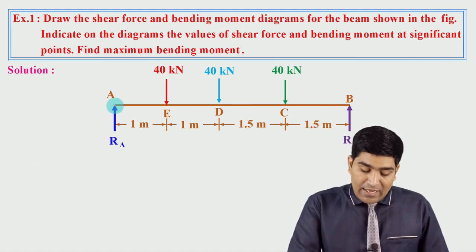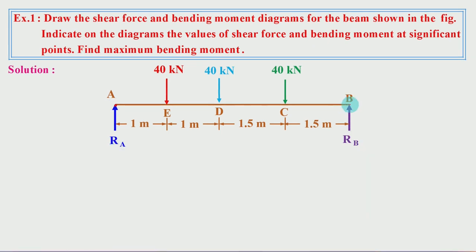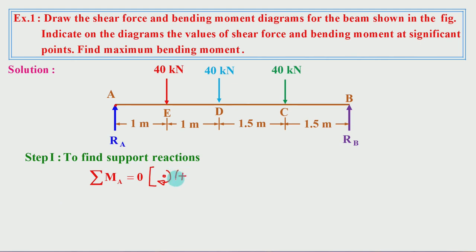First we need to find the reaction RA at point A and reaction RB at point B. Step 1: To find support reactions, we apply the condition of equilibrium — summation of moment about point A equals zero. For sign convention, a clockwise moment is positive and an anticlockwise moment is negative.